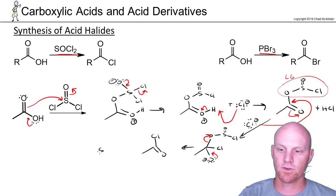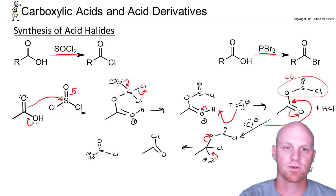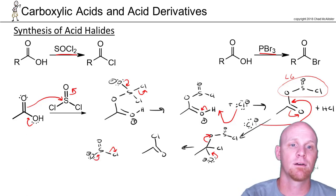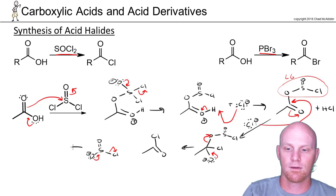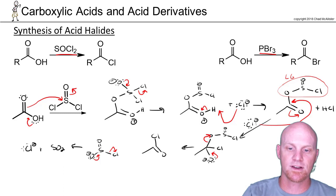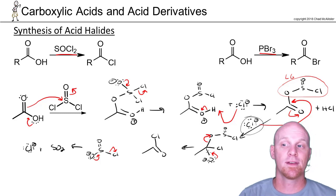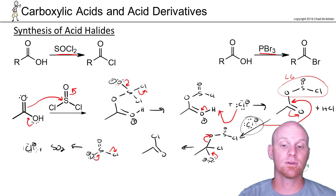Our leaving group is this species, which further decomposes: the electrons come down, kick off the chloride, and we form some SO2 gas and another chloride ion. So a product of this reaction is indeed that chloride ion. We already produced one earlier in the process, and it's also a product of the reaction — so there should be chloride floating around in solution.